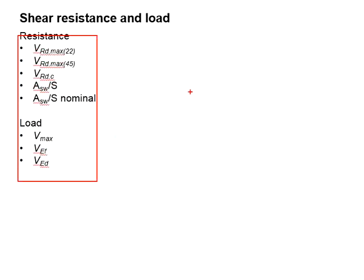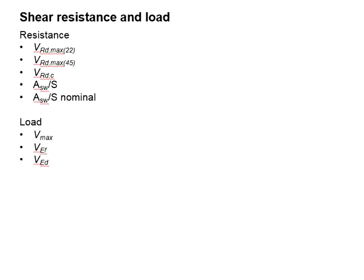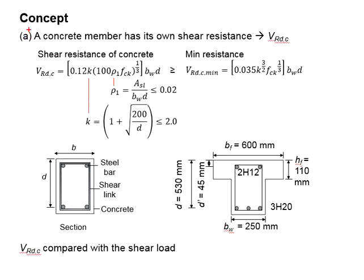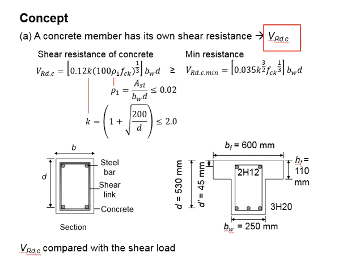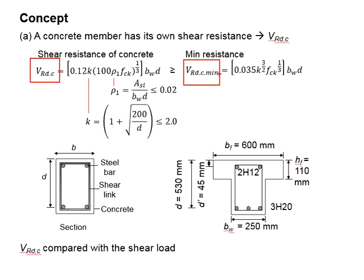Having so many types of shear resistance and loads can be quite confusing. Therefore, in these videos, we are going to put them together in order to find their relationships. To explain this, we must first understand the basic concept of shear resistance. A concrete member has its own shear resistance, represented by VRDC, which represents the shear resistance of the concrete without any shear reinforcement.